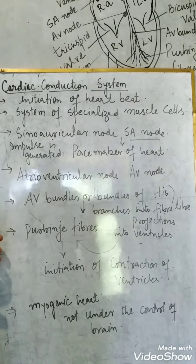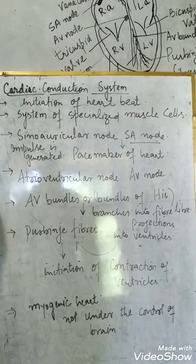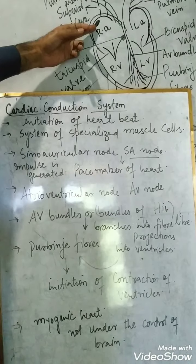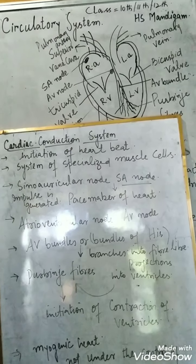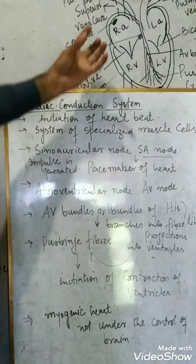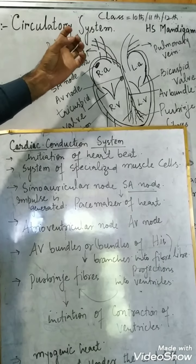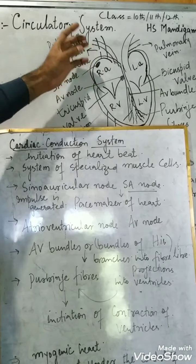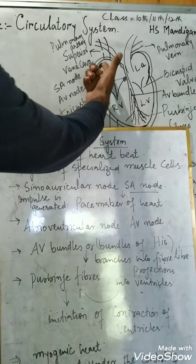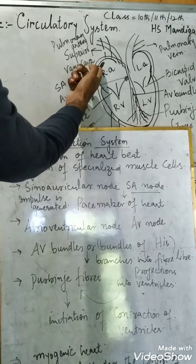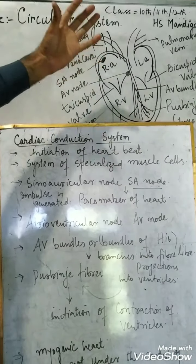These four types of muscle cells are responsible for the initiation of the heartbeat. The SA node, present at the upper side of the right atria, is where the initiation of the heartbeat takes place automatically. Electrical impulses are generated here and they initiate the heartbeat. This is also called the pacemaker of the heart because it sets the pace of the heartbeat.